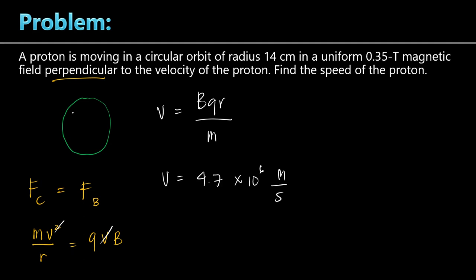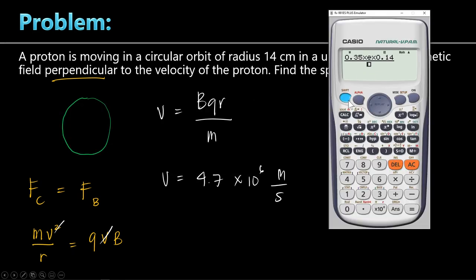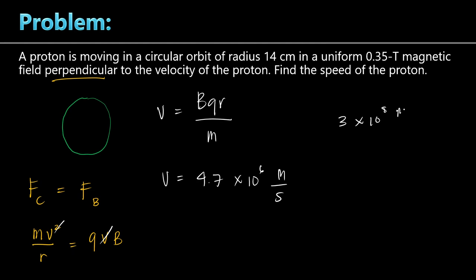What if we used an electron instead? Only the mass would change, since the mass of an electron is much smaller than the mass of a proton. Changing to the electron mass (constant 03), the result is 8.6 times 10 to the 9 — which is impossible. Why? Because the maximum speed in the universe is the speed of light: 3 times 10 to the 8 meters per second. Nothing can exceed that speed. So in this problem, a proton is used, not an electron.